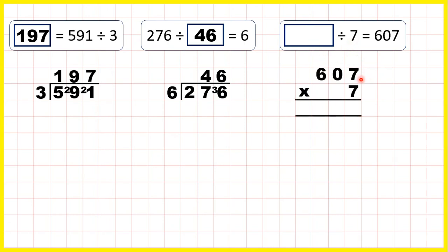So we can use short multiplication. 7 times 7 is 49. 0 times 7 is 0, plus 4 is 4, and 6 times 7 is 42.